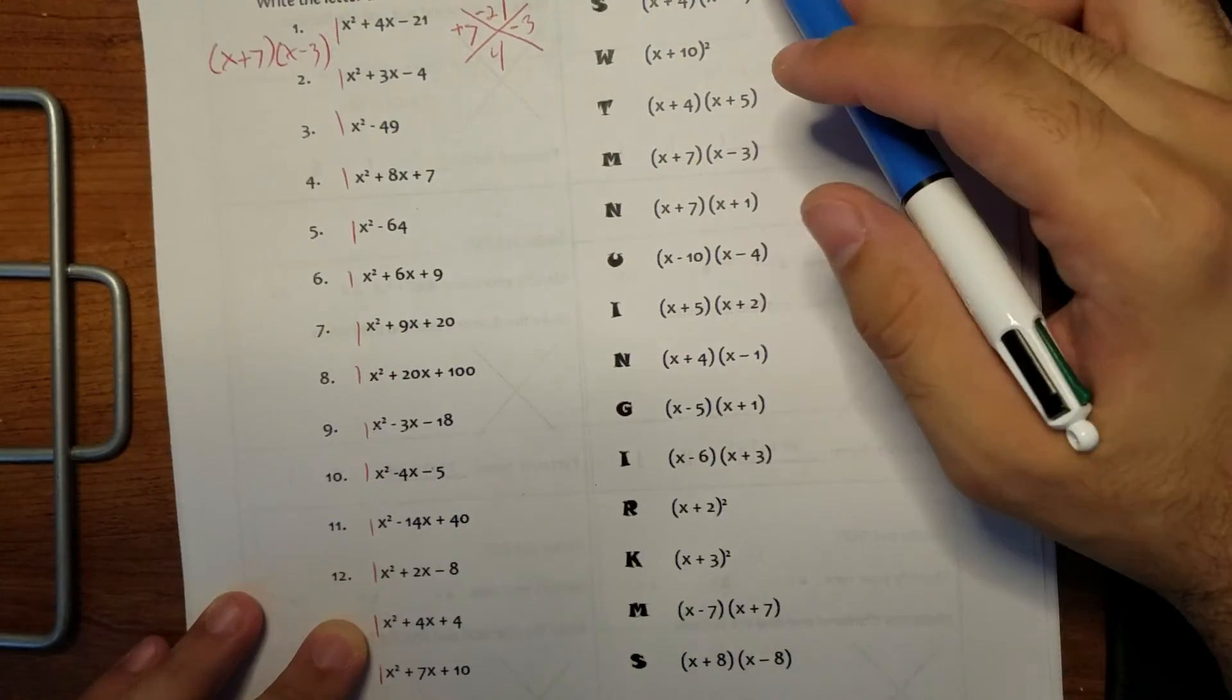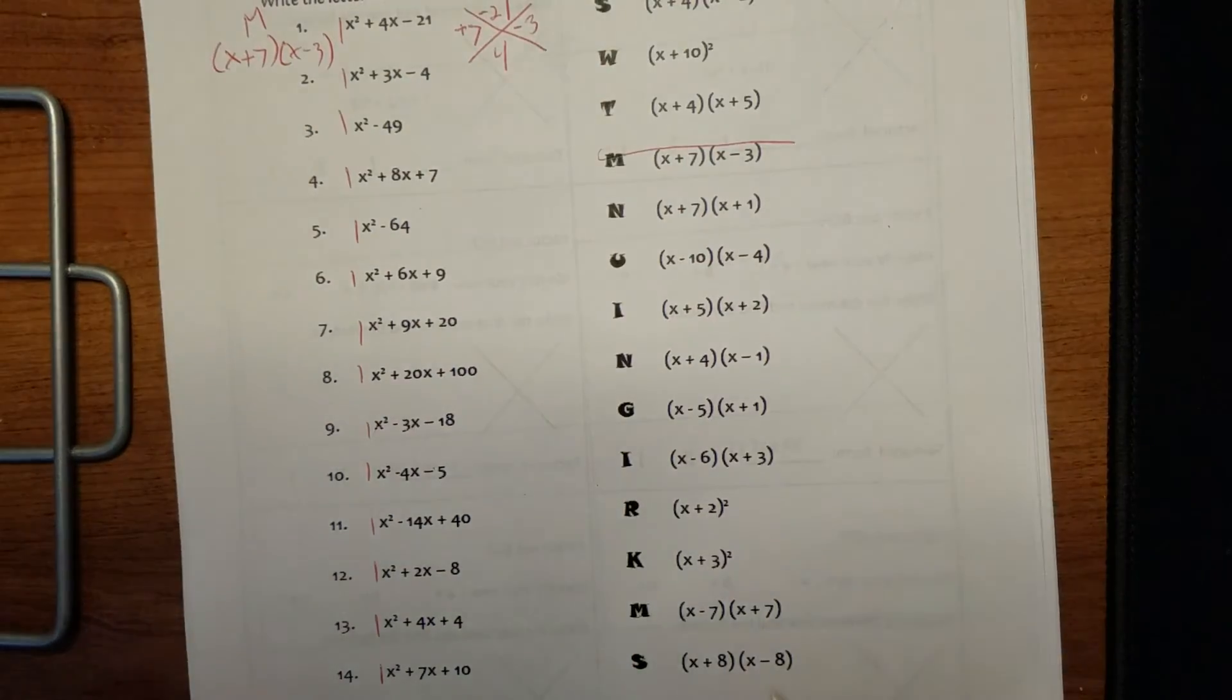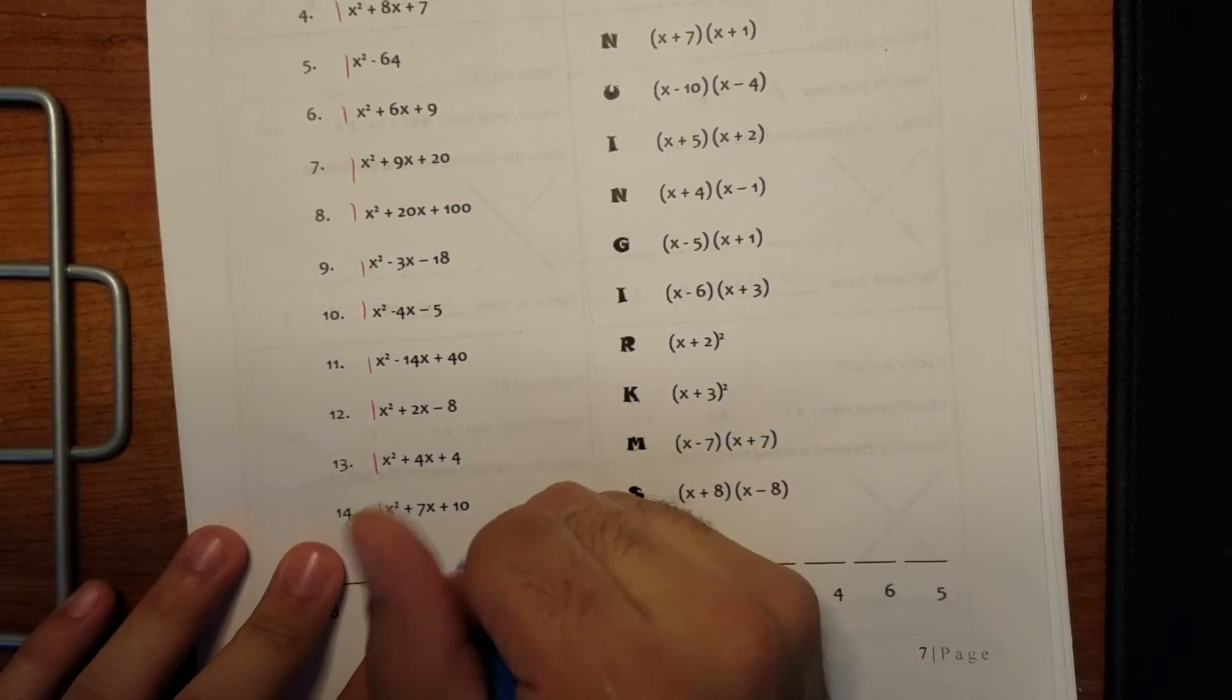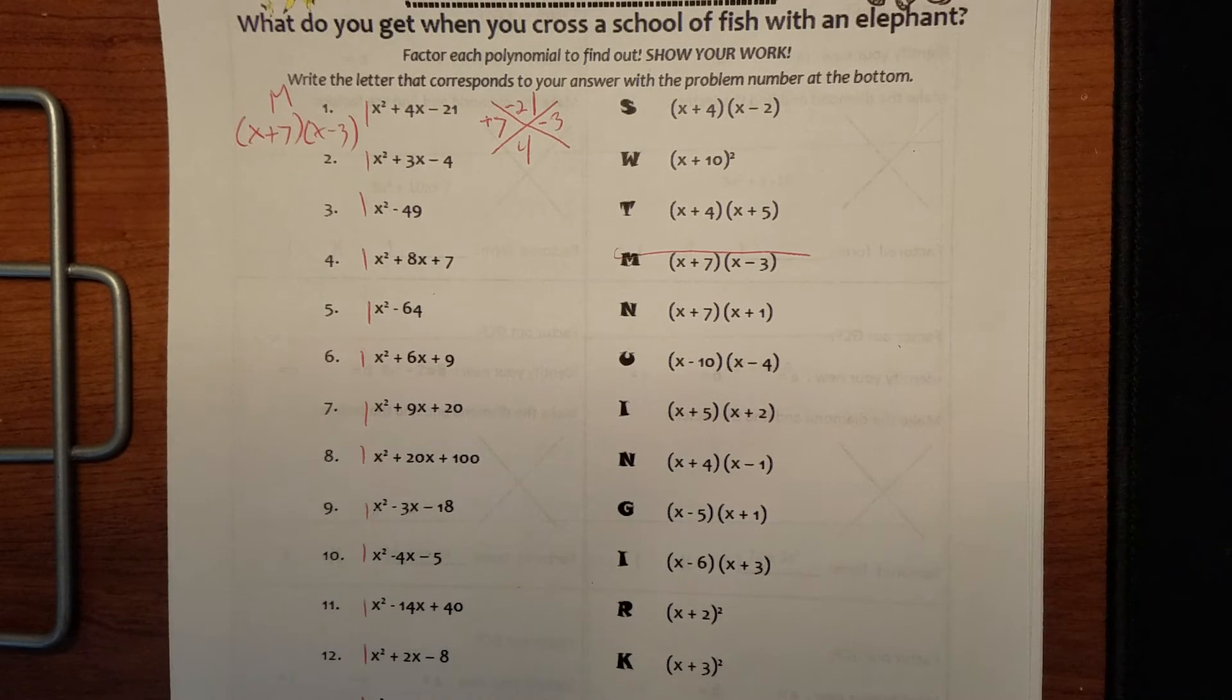Match them to the right side, X plus seven, X minus three, good. So one is M, same thing we've done before, one is M, and there you go. Same thing, nice, easy for our finishing touch.